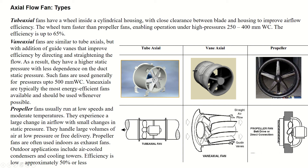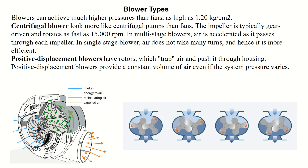Vane axial fans are used generally for pressures up to 500 mm of water column. They are typically the most energy efficient fans available and should be used whenever possible. Number three is propeller fans — they are simple in geometry, can handle large volumes of air, and are mostly used for exhaust and ventilation purposes. Their efficiency is approximately 50% or less.